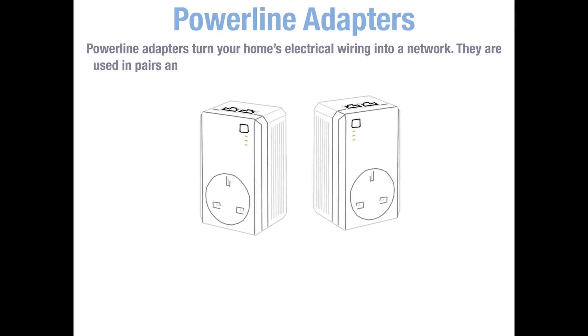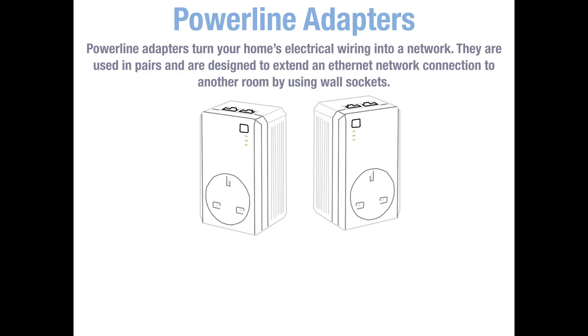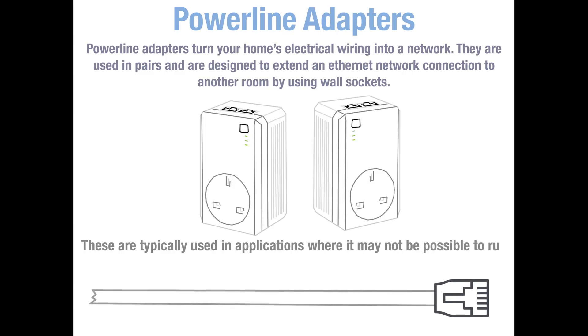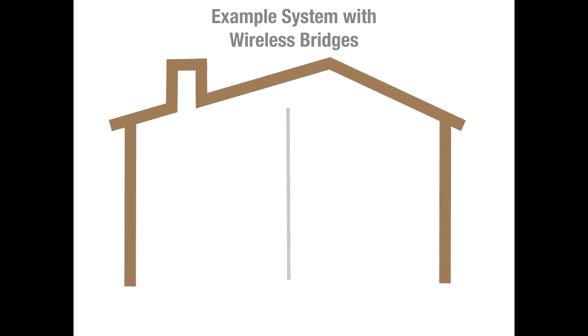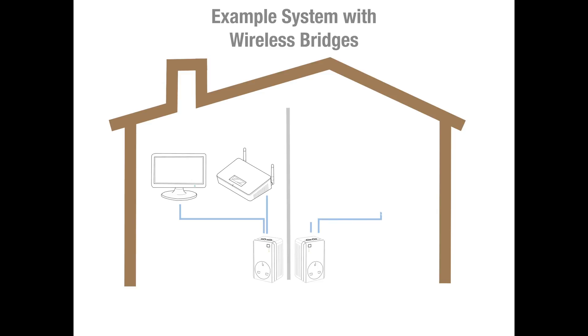Power line adapters are used to turn your home or office's electrical wiring into a network. They are used in pairs and are designed to extend an ethernet network connection to another room via wall sockets. These are useful in situations where it's not easy or may not be possible to run network cables from room to room. In this example, in the first room is a router along with a computer connected to the first power line adapter. In the next room is the second power line adapter connected to a VoIP phone. There is also a PoE injector connected to a camera, as the power line adapters don't provide power — they are just designed to extend your network.